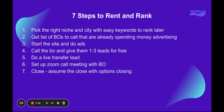Number four: call the business owner and give them one to three leads for free. The reason we do this is because you're providing value up front, letting the business owner know that you're producing leads for their business. They'll try it out and figure out they've closed a couple leads or made appointments and made money. Then they'll come back and say, 'How can we work together?' Number five: live transfer the leads to them. Number six: set up a Zoom call meeting with the business owner. And number seven: close the deal. Those are the seven steps to start your Rent and Rank business, get clients, and start making money.